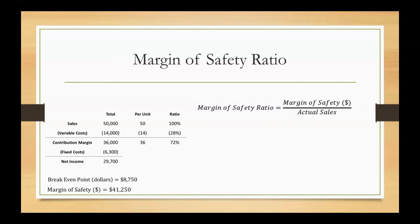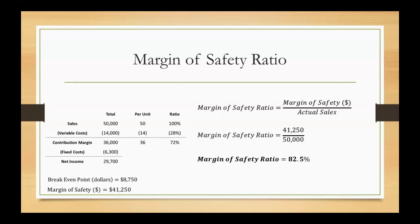For the margin of safety ratio, we take our margin of safety in dollars that we just found and divide that by our actual sales. Our margin of safety in dollars was $41,250 divided by our actual sales of $50,000, giving us a margin of safety ratio of 82.5%.